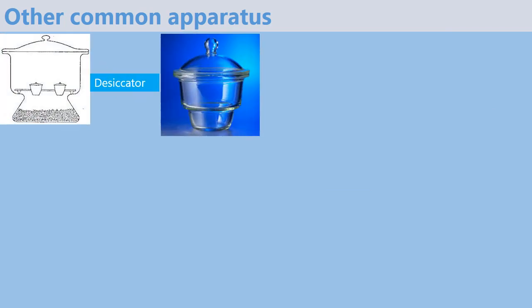Next apparatus is the desiccator. A desiccator is used for drying substances or keeping moisture away from substances.